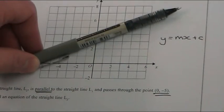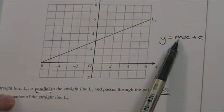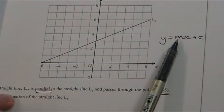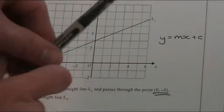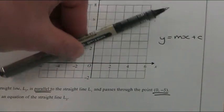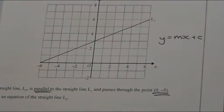And the bit that controls the steepness, or what we call the gradient, is the m part. So that must be the same for it to be parallel. So let's find the gradient, and then we're going to keep it the same.